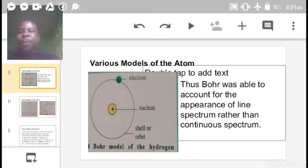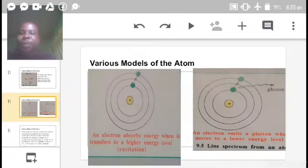We have what Bohr was talking about, the electron outside, the nucleus is positive, and then we have the shell, electronic shell or the orbit. That diagram shows what Bohr found out after studying the hydrogen atom. Bohr was able to account for the appearance of line spectrum rather than continuous spectrum. Those two diagrams show an electron absorbs energy when it transfers to a higher energy level, called excitation. When it drops from higher to lower energy level, it will emit a photon of light whose energy is given by HF equals EU minus EL.